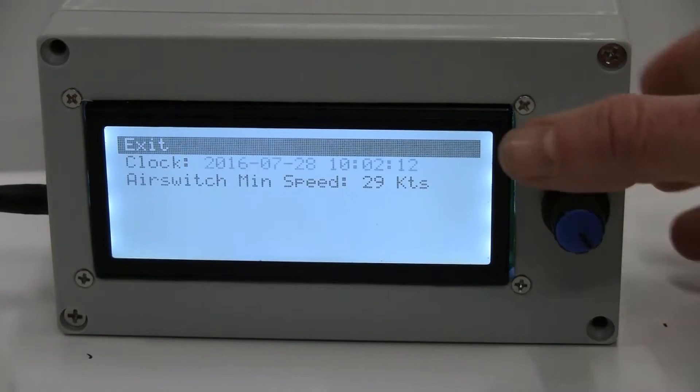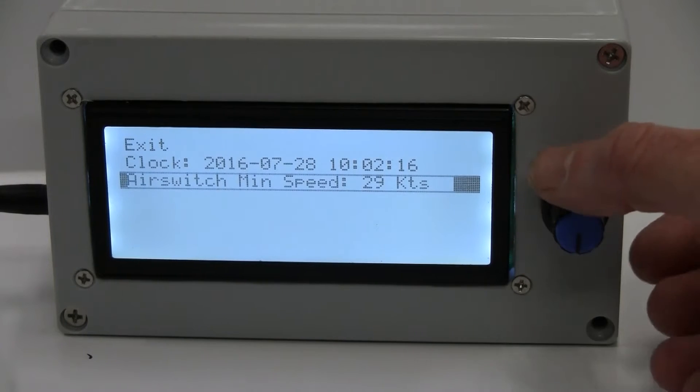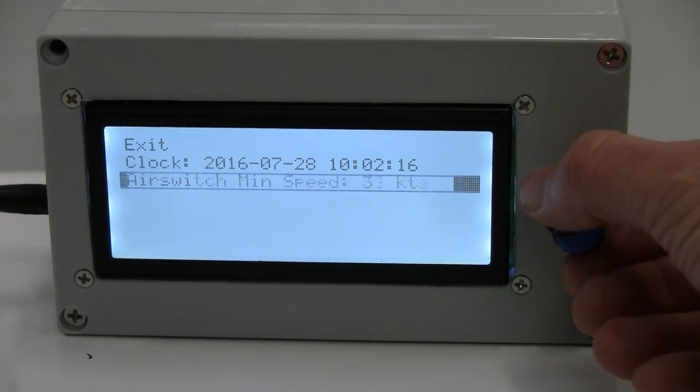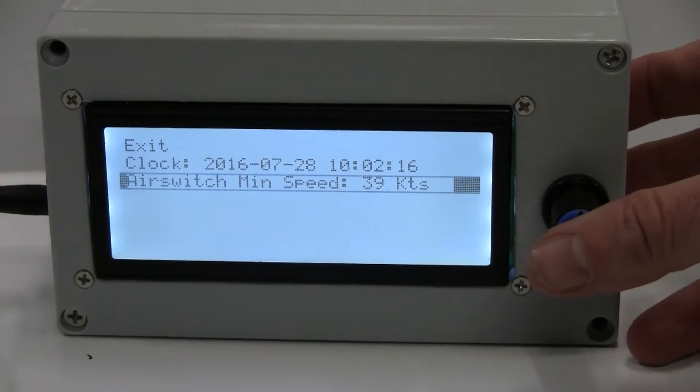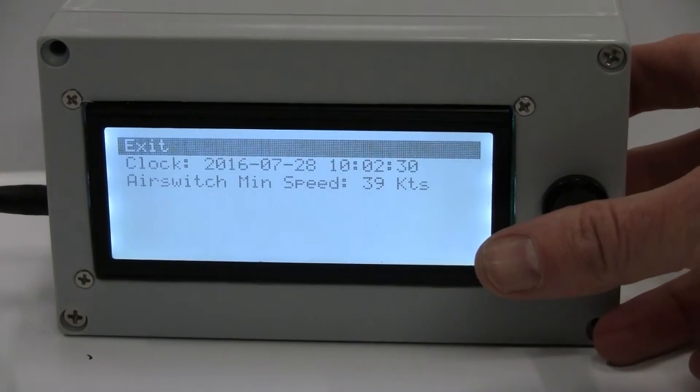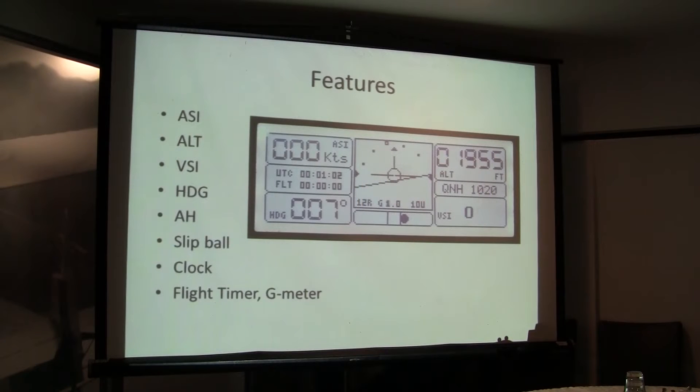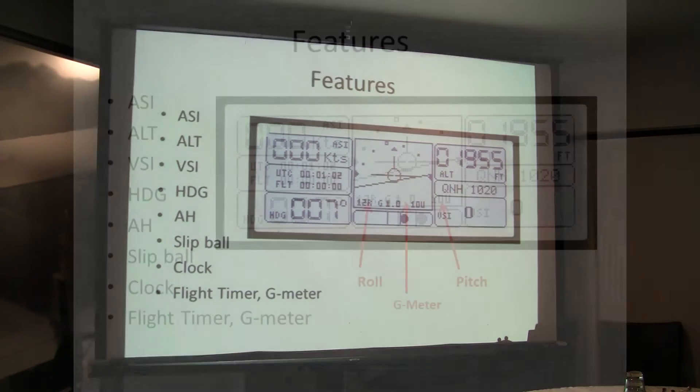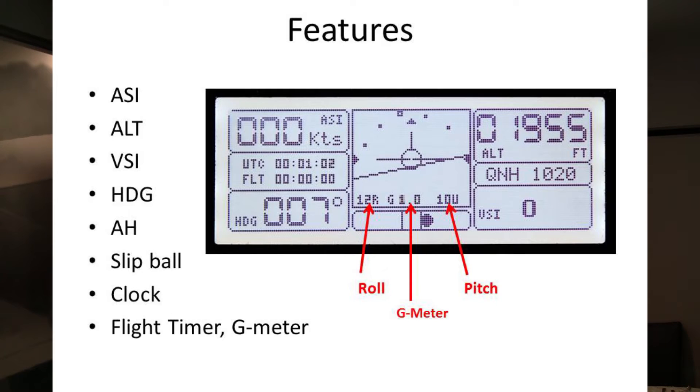And I also put the flight timer that basically kicks in once you reach certain speed. Like, say, your aircraft lifts off at, I don't know, 40 knots. So, you can set 40 knots and your clock starts at that point. And once you stop, it basically stops the clock. So, you kind of know how much time you flew. And it also has the g-meter. I don't know, because I could.